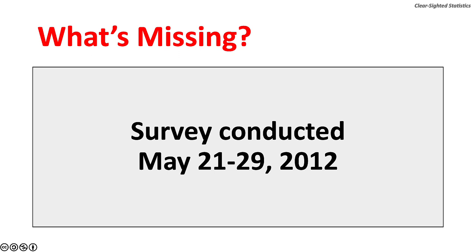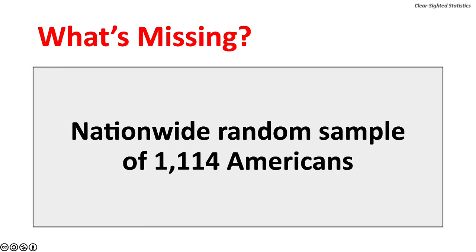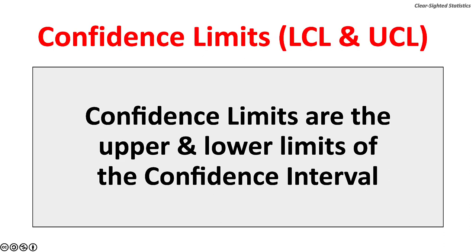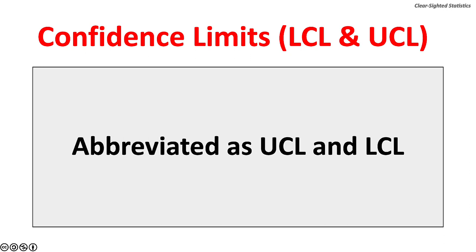What is missing from this report? First, the dates of the survey: May 19th through 29th, 2012. Second, details on the sample and sample size — a nationwide random sample of 1,114 Americans. Third, the confidence level, which is 95%. Confidence limits are abbreviated LCL and UCL. Confidence limits are the upper and lower confidence limits of the confidence interval. The upper confidence limit is abbreviated as UCL, and the lower confidence limit is abbreviated as LCL.